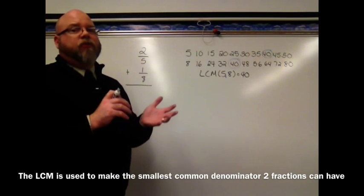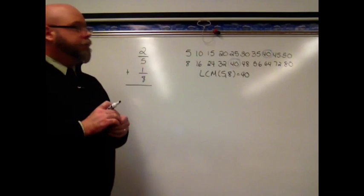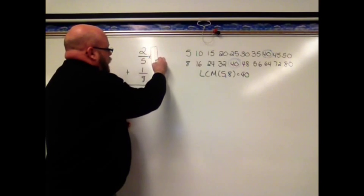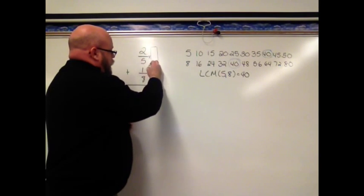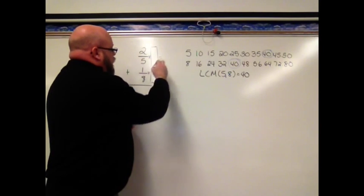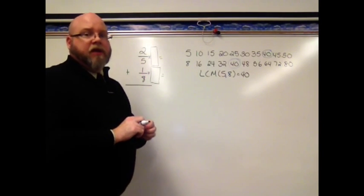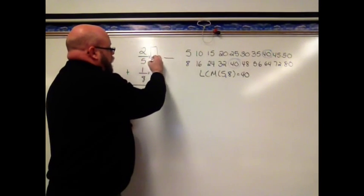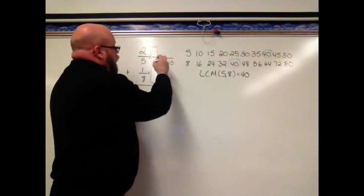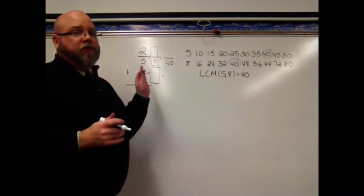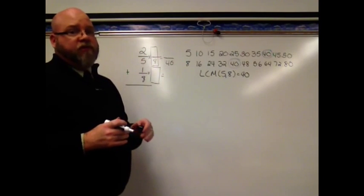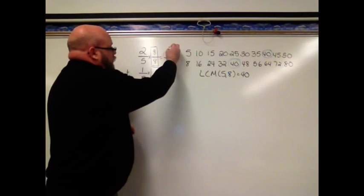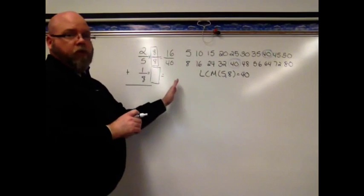We can only add and subtract fractions when the denominators are the same. So I'm going to be thinking about, what do I multiply 5 by that's going to get me a denominator of 40? Well, 5 times 8 is 40. So my fraction equal to 1, because I'm just changing the name, not changing the value of my fraction, is going to be 8 over 8. So 2 fifths gets renamed 16 fortieths. Same value, new name.